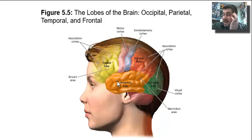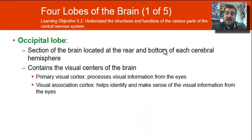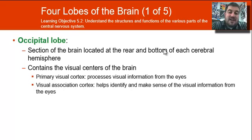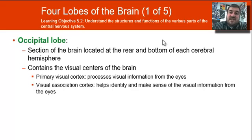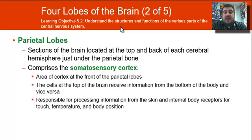The occipital lobe is located at the rear and bottom in the back of your head, and it controls your vision. It has your primary visual cortex and your visual association cortex. Just know that it is in charge of vision, which is why when you get hit in the back of the head, sometimes you can see stars if that part of the brain is damaged, even temporarily.